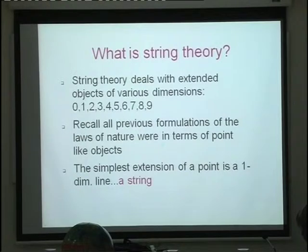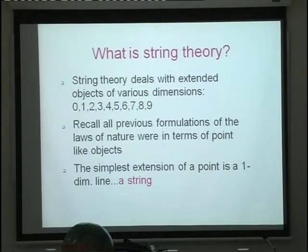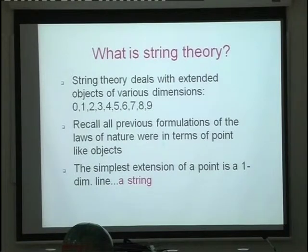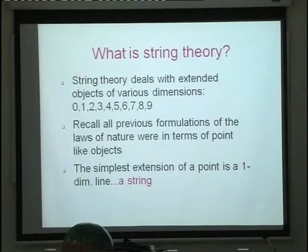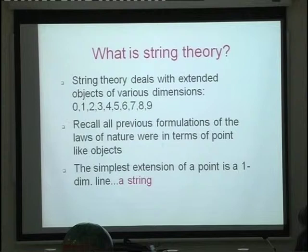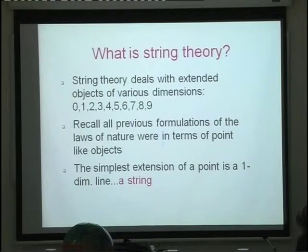The basic way we formulate the laws of nature is usually in terms of point particles. String theory makes a paradigm shift: the building blocks of nature are not only point-like objects but extended objects. The dimension of those extended objects can go all the way from zero to nine — zero is a point, one dimension is a string, two dimensions is a membrane, and so on.